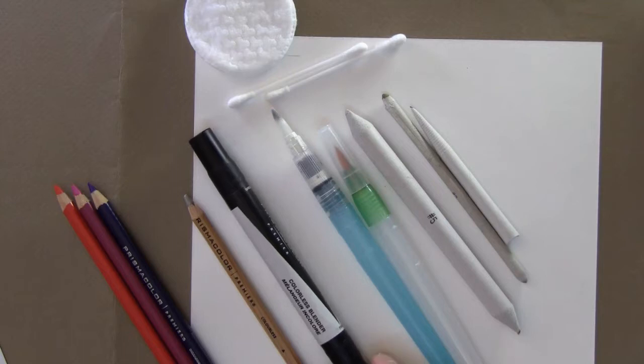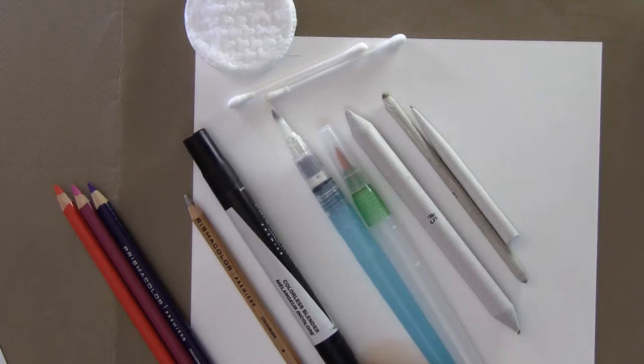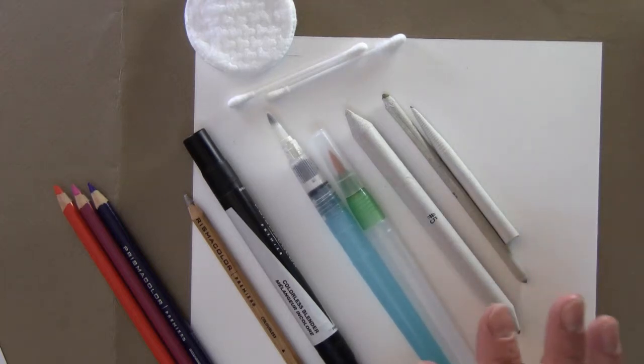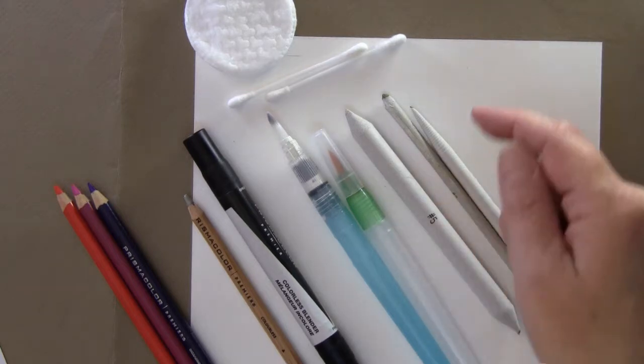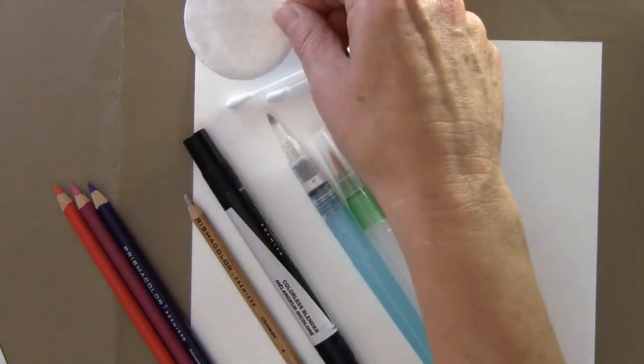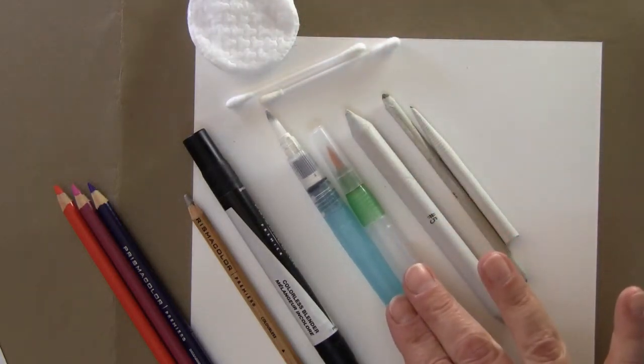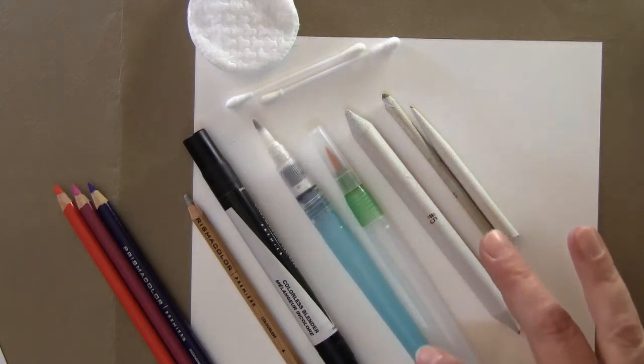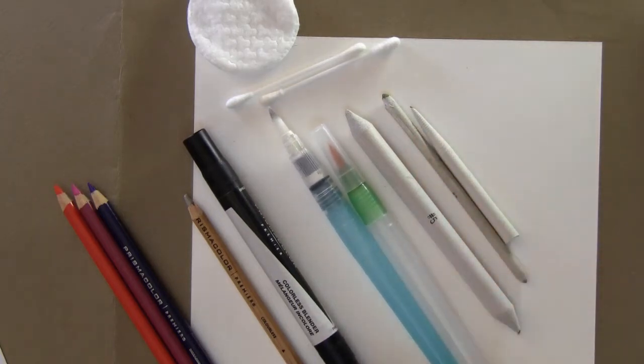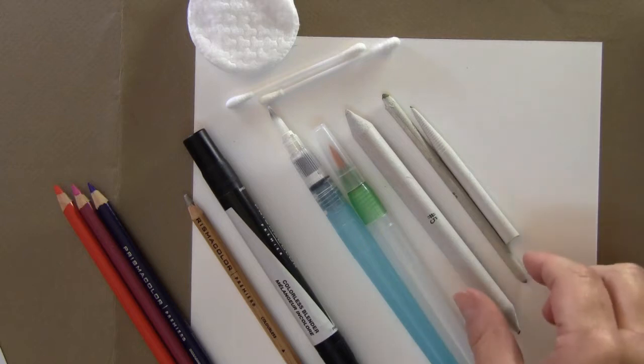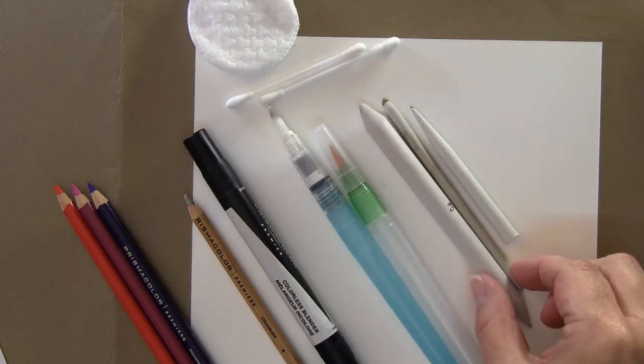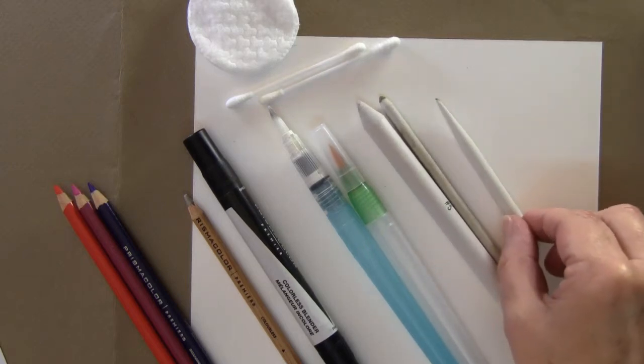Colorless blenders also come in marker form and that acts like a solvent. Solvents dissolve the pencil and enhance color, and solvents can be applied with a cotton pad or Q-tips, or you can get these water brushes and put the solvent in the handle. And then we have things like the gray paper stumps and the tortillon.